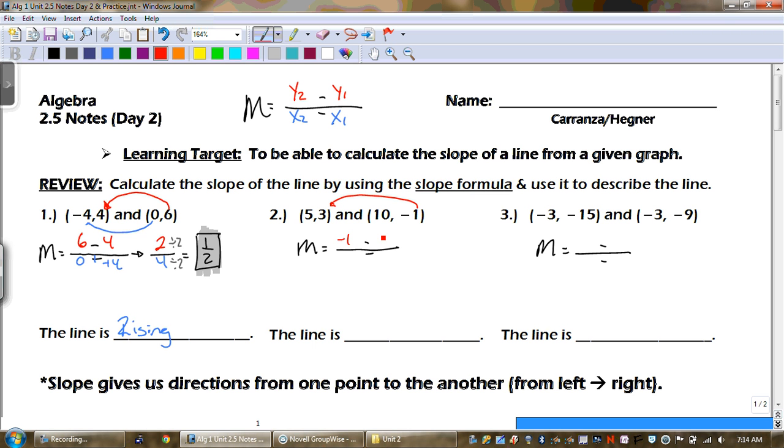We got negative 1 and 3, and then 10 and 5. So when we do all that, negative 1 minus 3 is negative 4, and then 10 minus 5 is 5. And guess what? We can't reduce that, so that's our answer. So what is it? Is it rising, falling, vertical, horizontal? Well, it's a negative slope. So if it's a negative slope, that means it's falling.